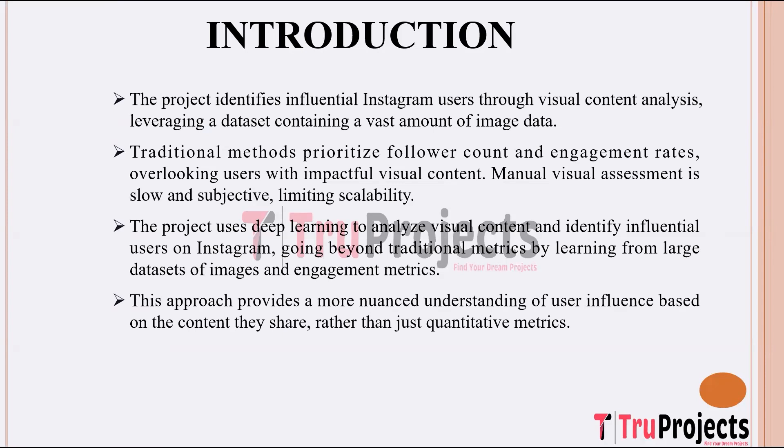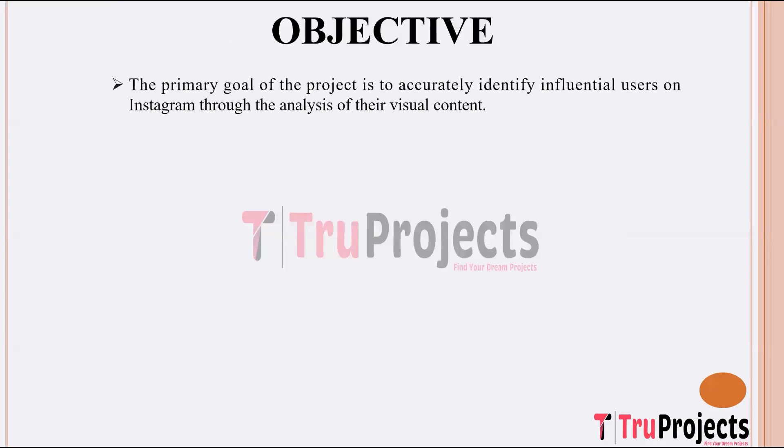This approach enables researchers to uncover subtle nuances within the content shared by users, offering valuable insights into the dynamics of influence on Instagram. As a result, the project contributes to a more comprehensive understanding of user influence in social media. The objective is to accurately identify influential users on Instagram by analyzing visual content, providing marketers with valuable insights into potential collaboration opportunities and targeted advertising strategies.